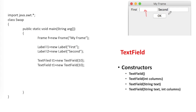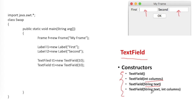Next I want two text fields where I can type text. TextField is an AWT class and it has four constructors: one with no parameters; one where you specify columns, which is the size or length of the text field; one where you can mention a default text to appear; and one taking both text and size. Here I have created two text fields, t1 and t2, with a size of 10.